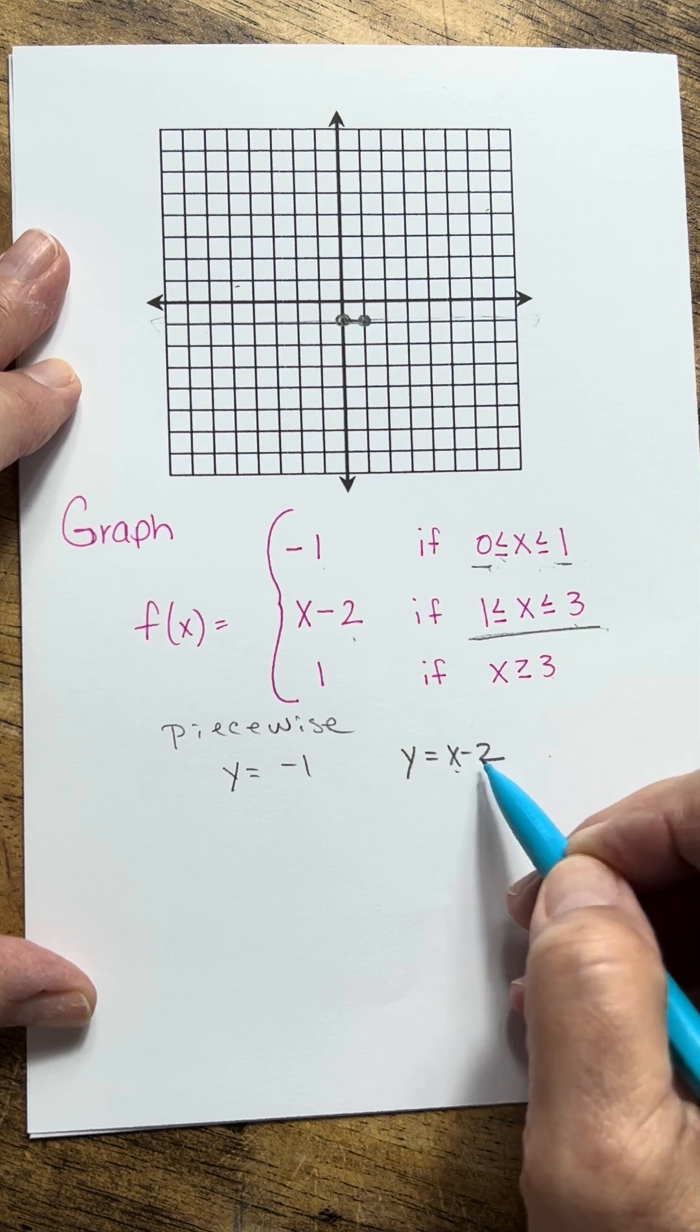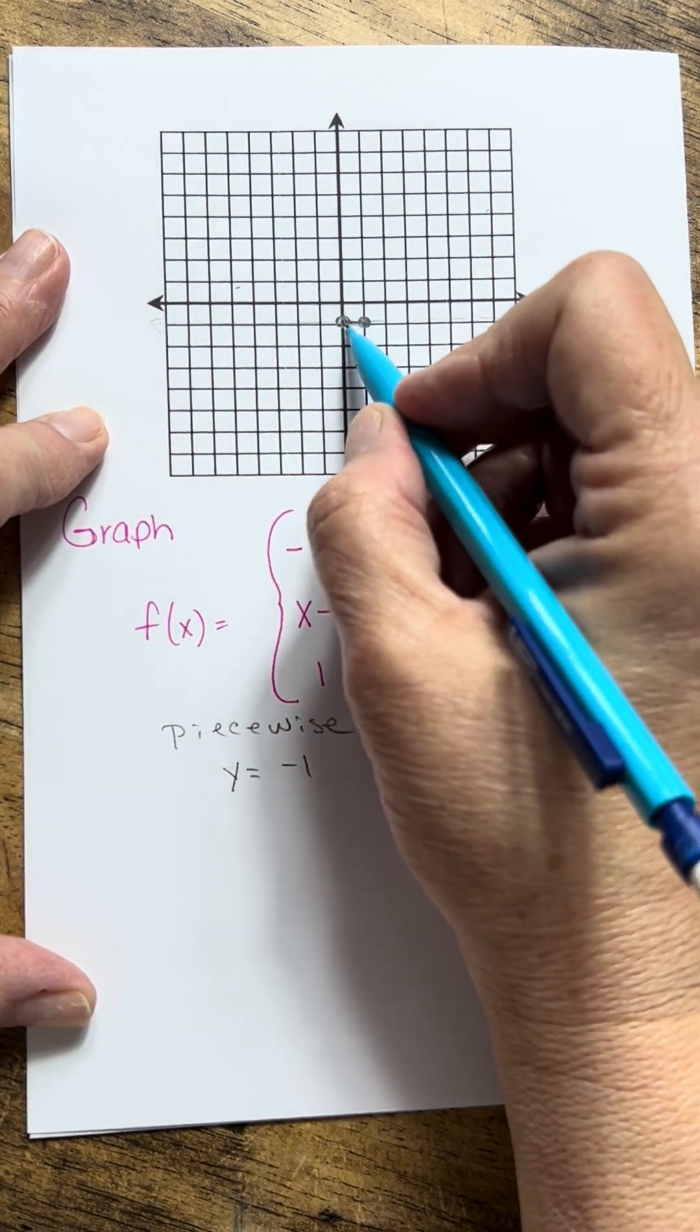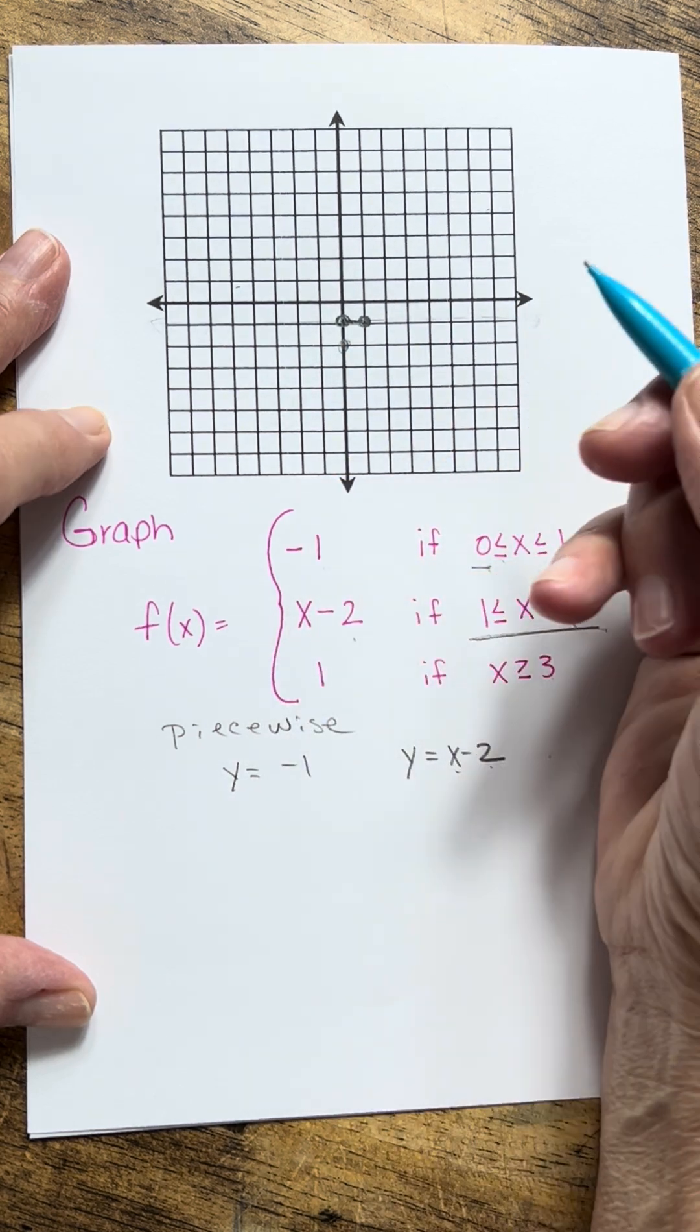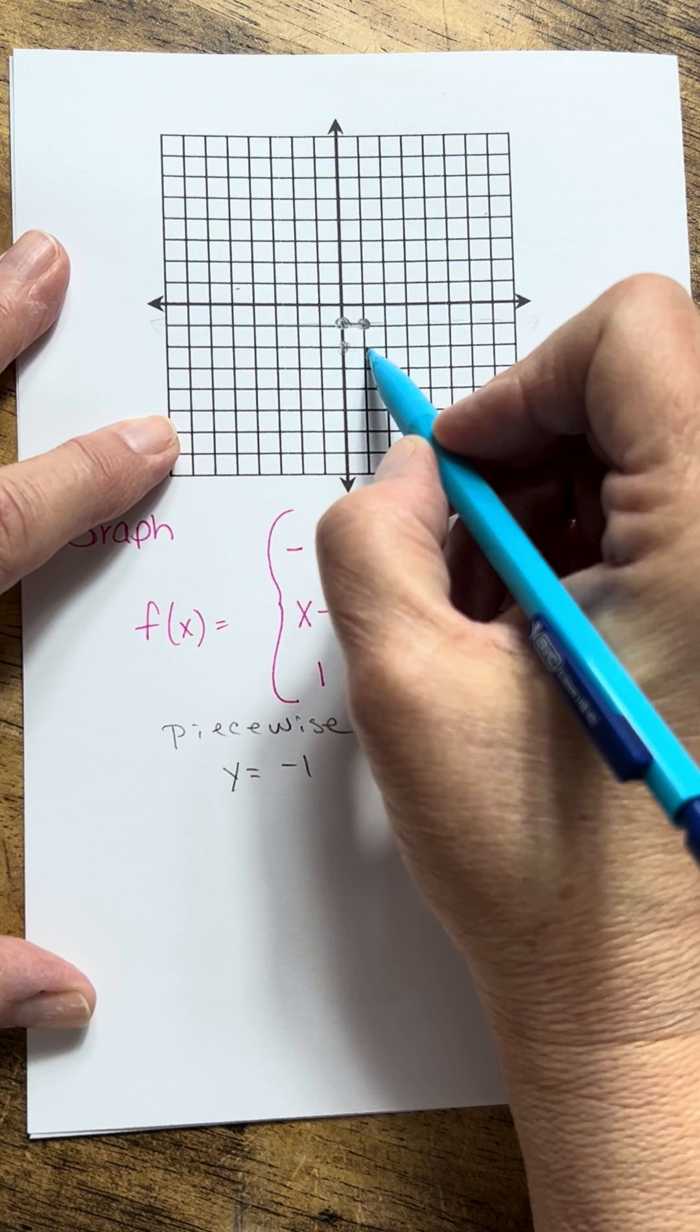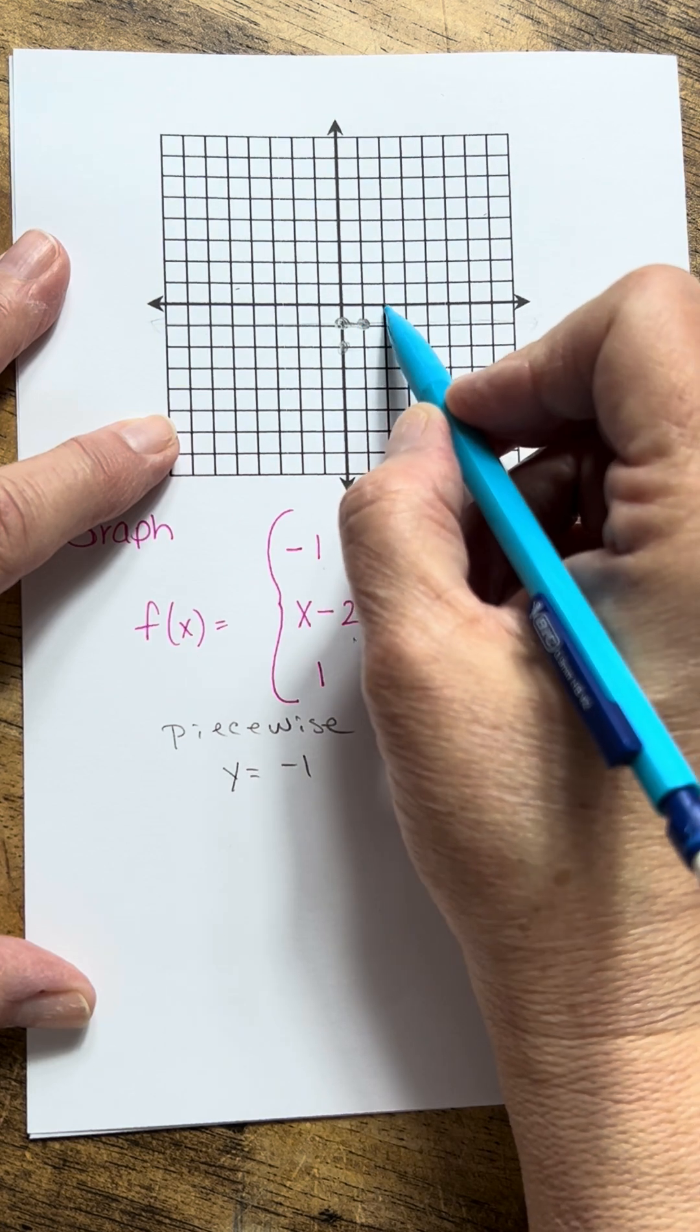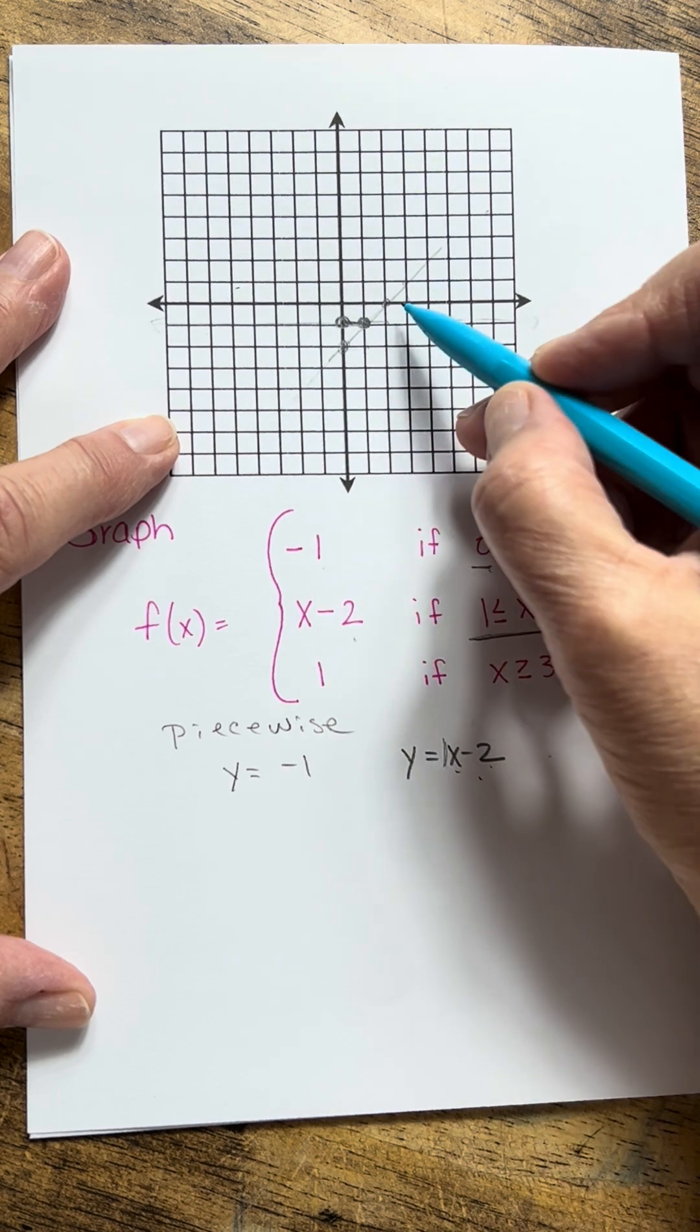So if I graph this, my y-intercept is at negative 2, so that would be down here. I'm just going to put it lightly so I can erase it. And then my slope is 1, so it would go up 1 over 1, up 1 over 1, up 1 over 1. So this is the whole line.